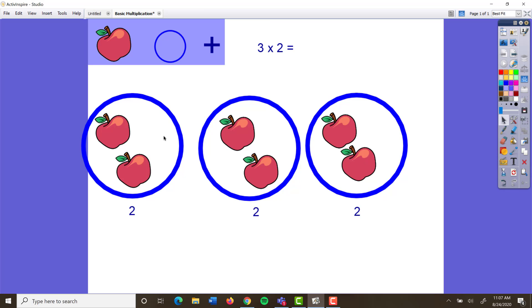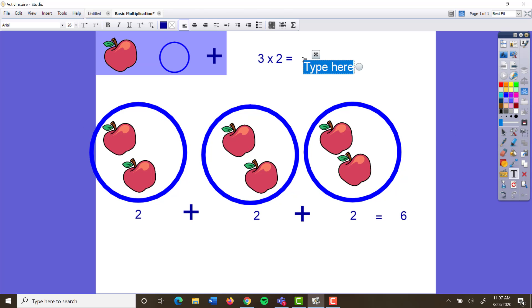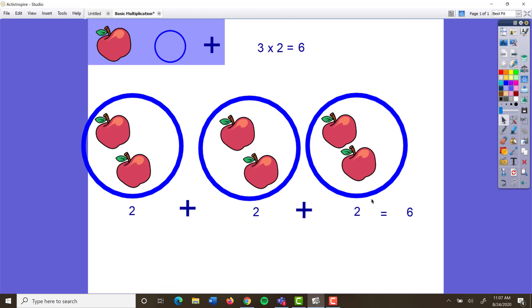So I was given the same amount of two apples three different times. If I put those together, I can add them. I can say two plus two plus two equals six. So three times two equals six. So that's the basics.